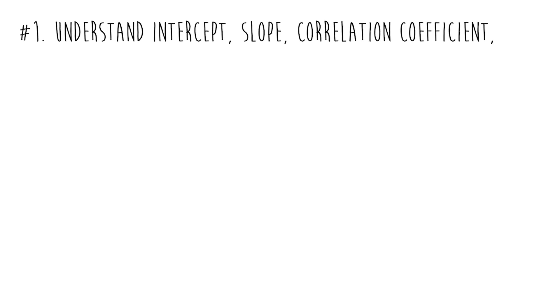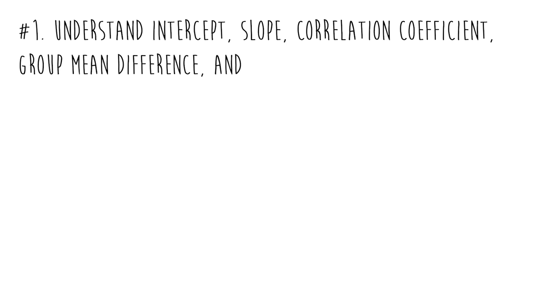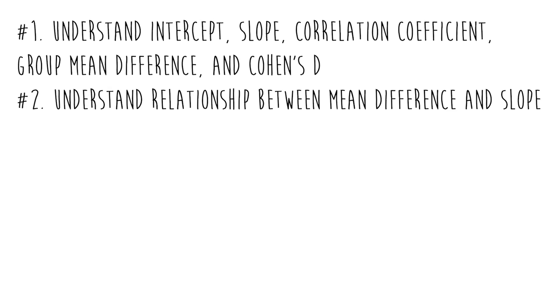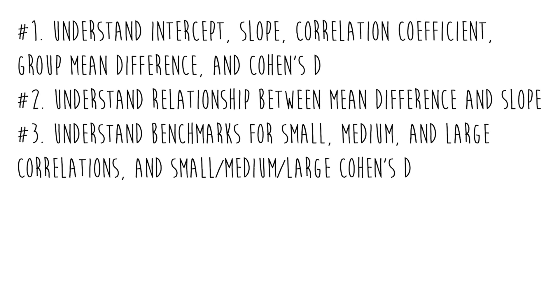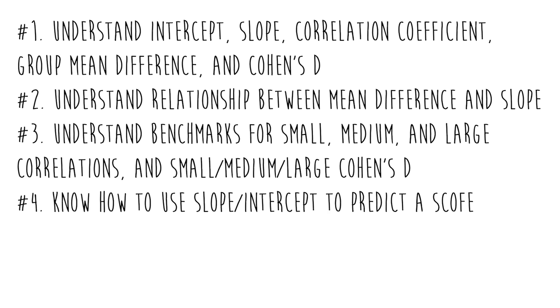That about wraps it up. Now let's review our learning objectives. Number one: understand what the following mean — intercept, slope, correlation coefficient, group mean difference, and Cohen's D. Really understand what those numbers tell you about your data, because it's always about what your data are trying to tell you. Also, understand the relationship between a mean difference and a slope — they're the same thing. Also, understand the benchmarks for a small, medium, and large correlation, as well as a small, medium, and large Cohen's D. And finally, understand how to use the slope and the intercept to predict someone's score. With that, peace out!